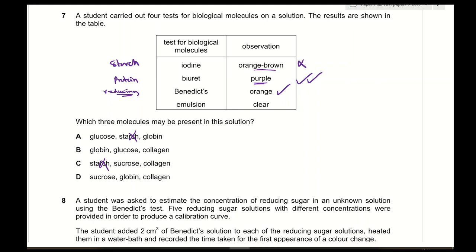For the emulsion test — tests for fats. The observation was clear, meaning fats are absent, since a positive test gives a milky emulsion. Therefore the correct answer must be B. Option D is incorrect because it mentions sucrose, which is a non-reducing sugar and would not give a positive result with Benedict's solution alone. The answer is B.